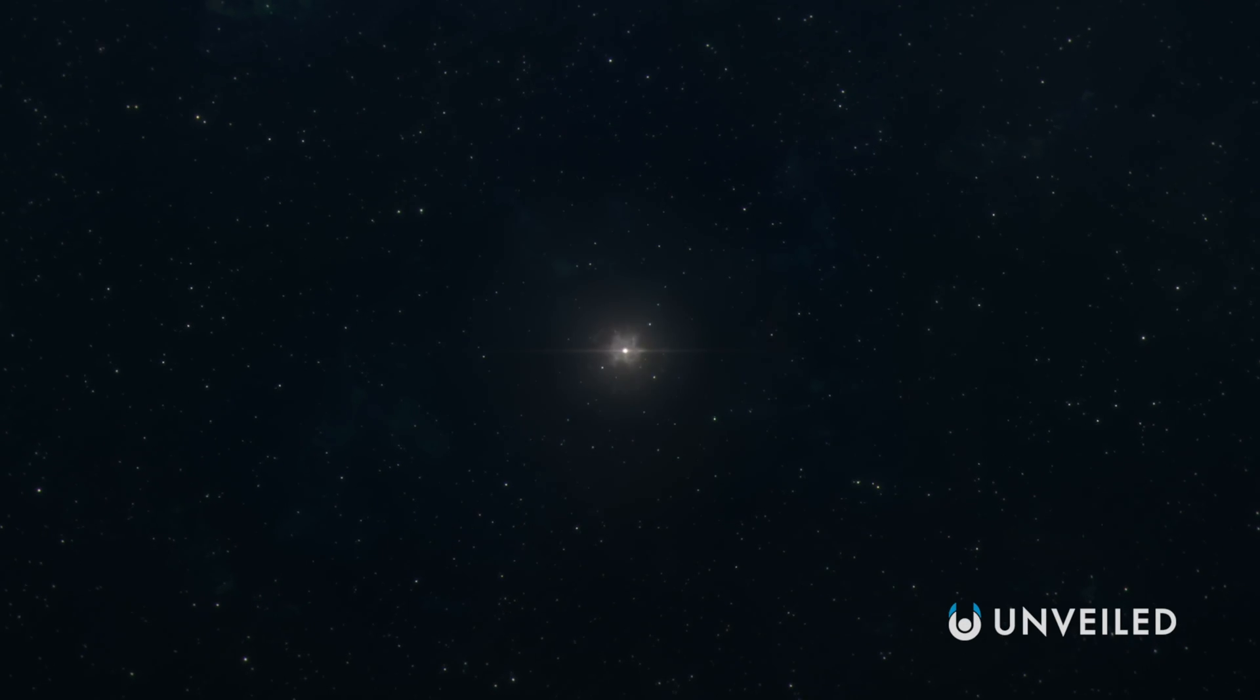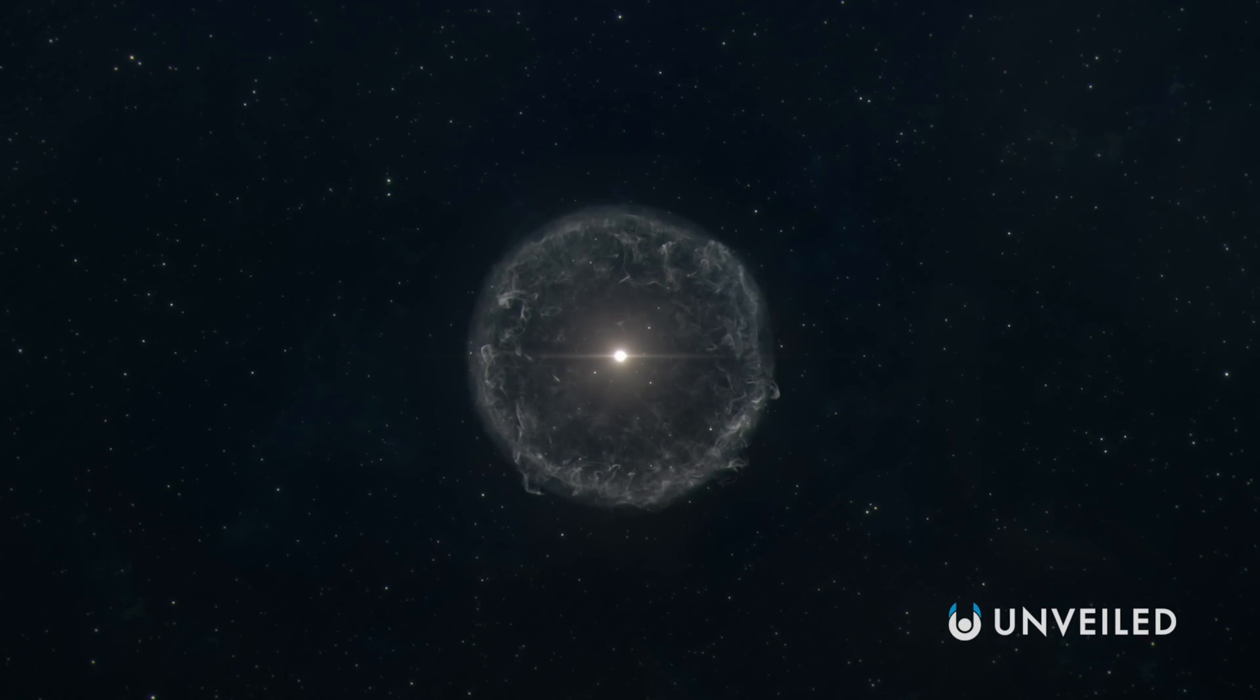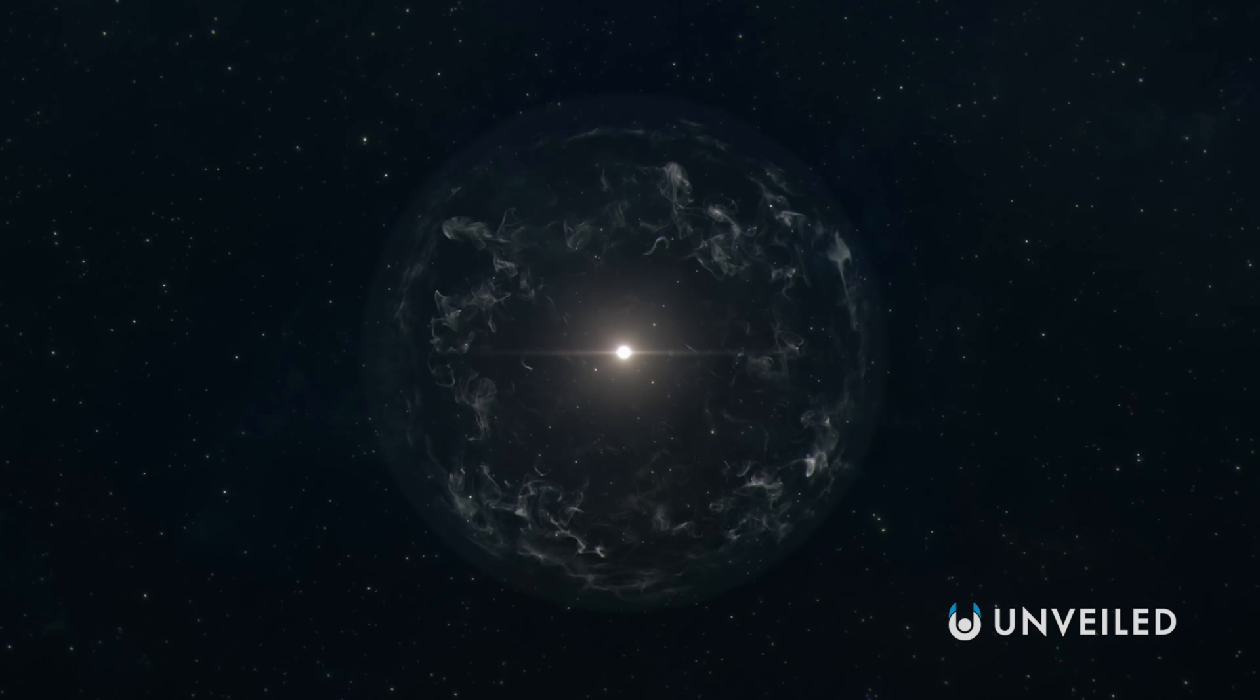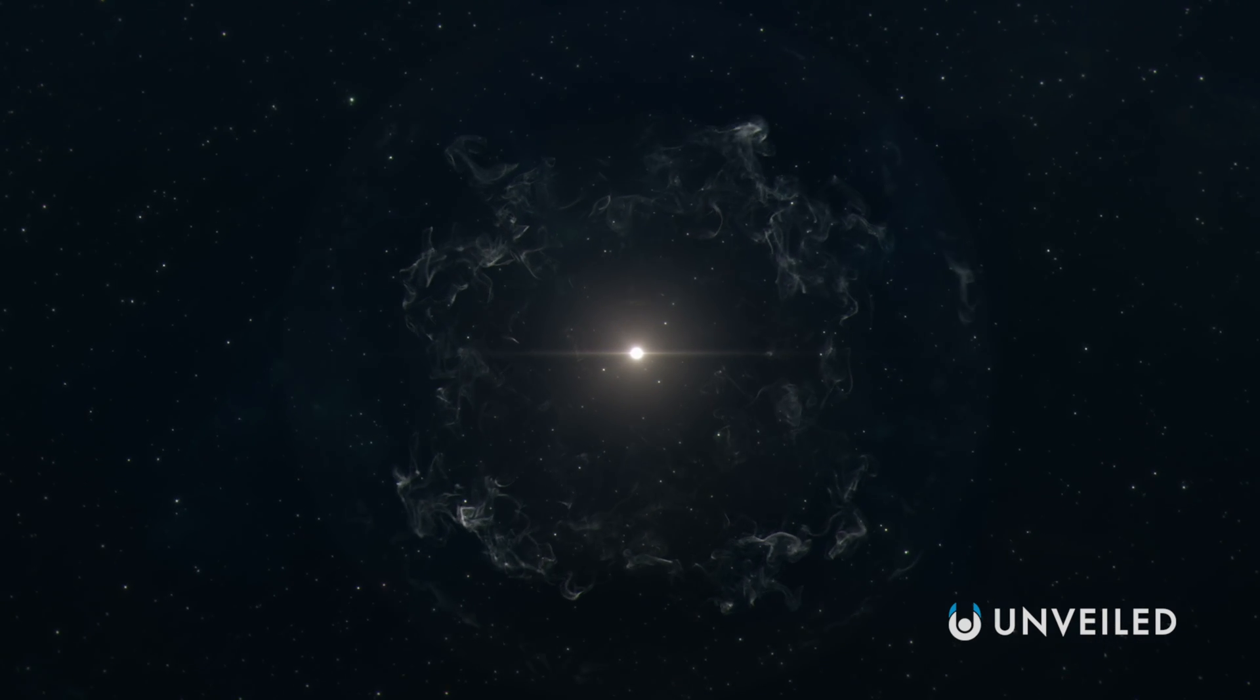The chance of planets existing in a 5D space such as this diminishes further when you consider how planets form. In our universe, the earliest version of a solar system is essentially a giant sphere of loose dust and gas surrounding a young protostar.